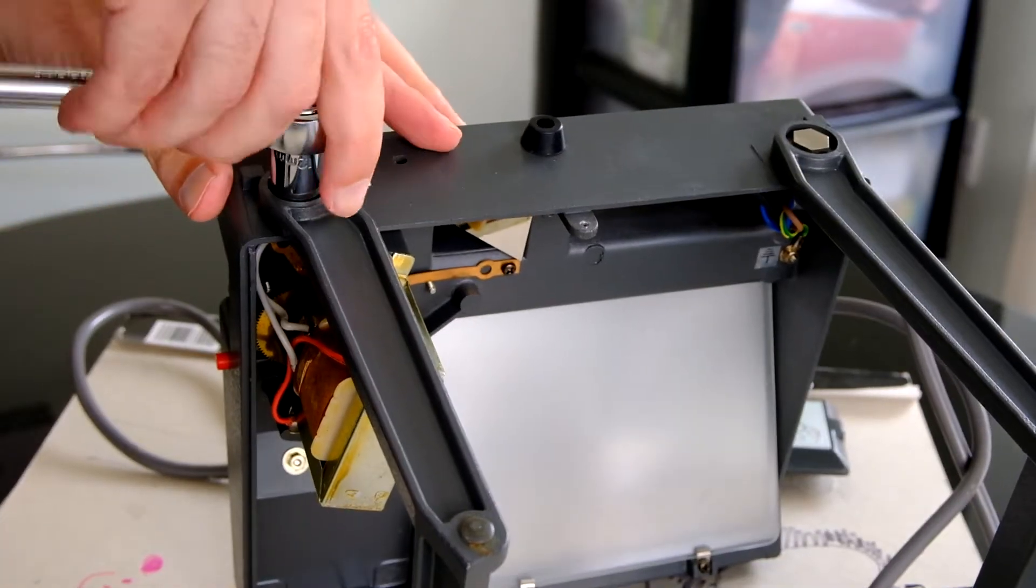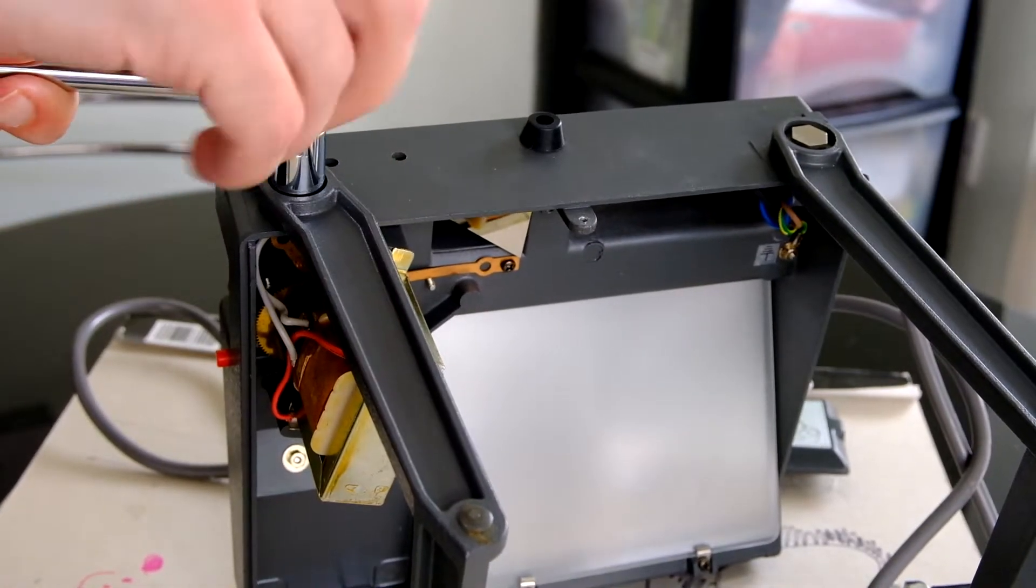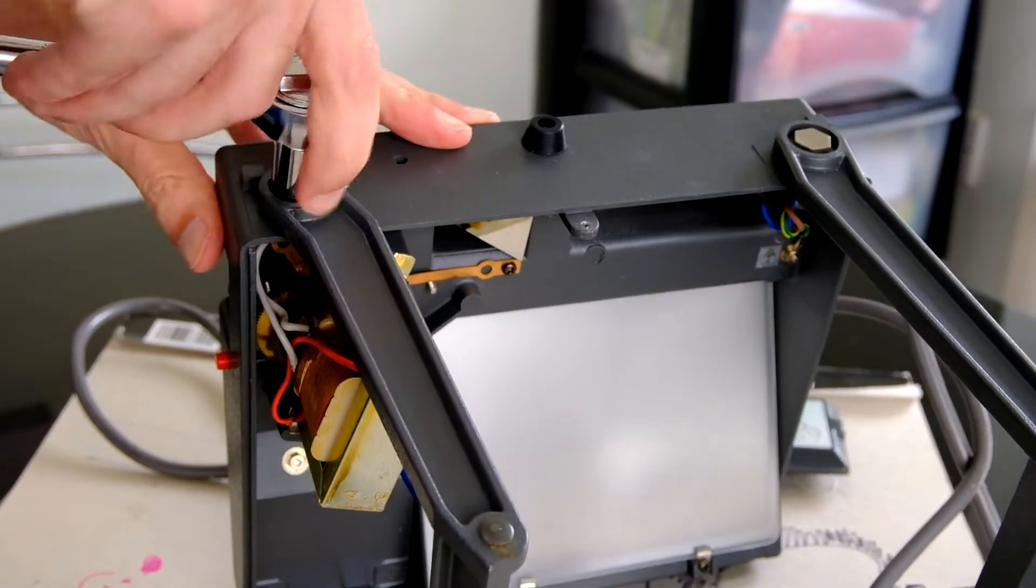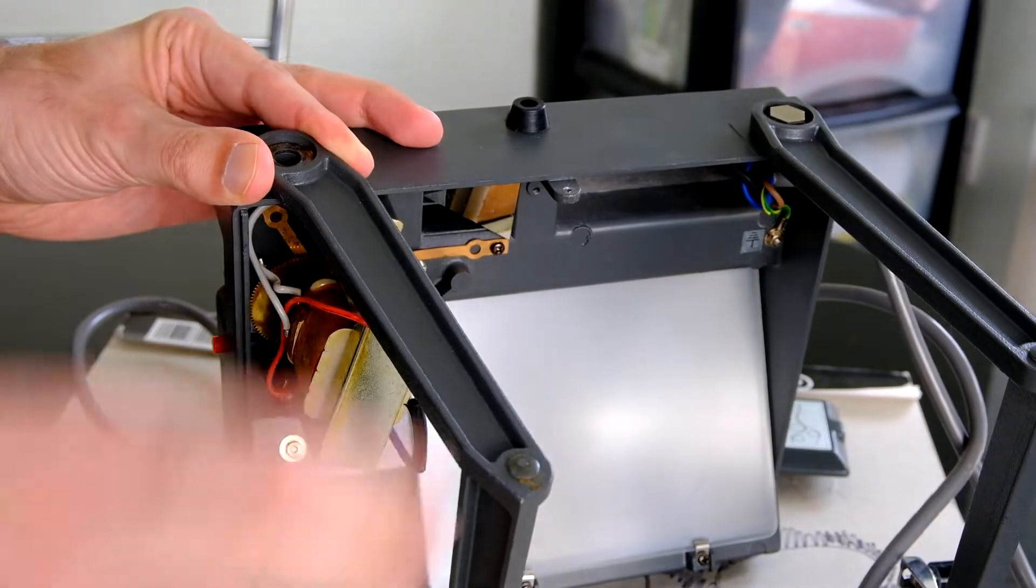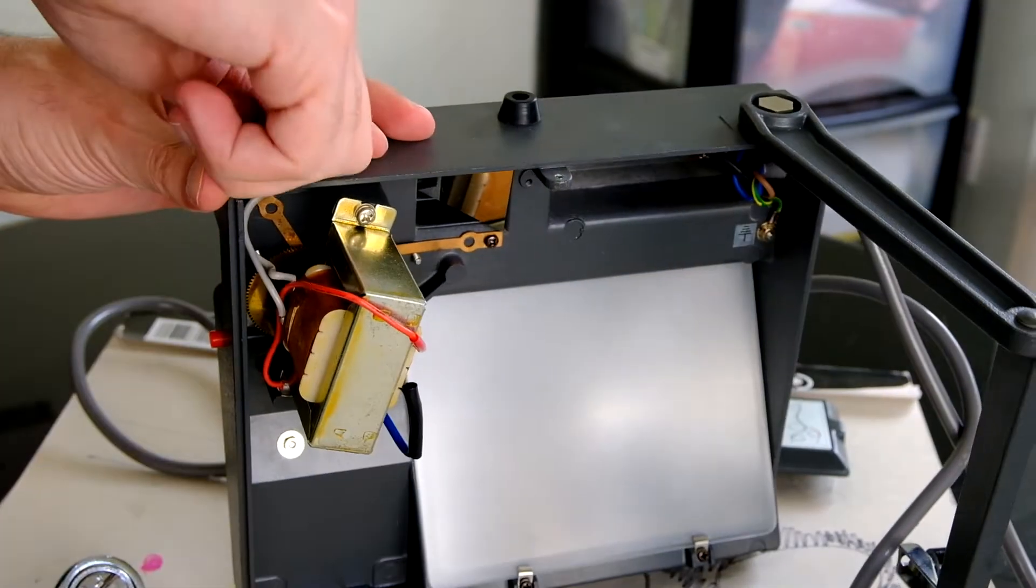First off, we can remove these arms. These were for the reel-to-reel. I'm not bothered about having those in the final build, so we can take those off, just unscrew those and then pop the other bit of screw back in.